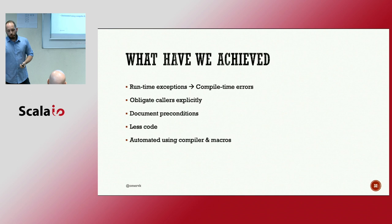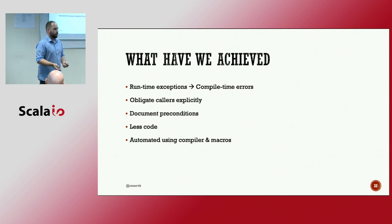So what have we achieved? We've achieved a change, a transformation from runtime exceptions to compile time errors. We've moved things further up in the lifecycle. We're obligating our callers explicitly. We're making sure that we're documenting our preconditions so that the callers are obligated to supply the correct type. And if they can't, then they have to handle that. We are writing less code. All of those tests that we used to check that these preconditions were met, we can delete them now. Because they won't compile, right? The tests themselves won't compile. So it's okay. We can delete them. And we've also stopped checking in our own code whether the values meet the criteria that we want. So we're not throwing exceptions anymore. And we're automating all this using the compiler and macros.